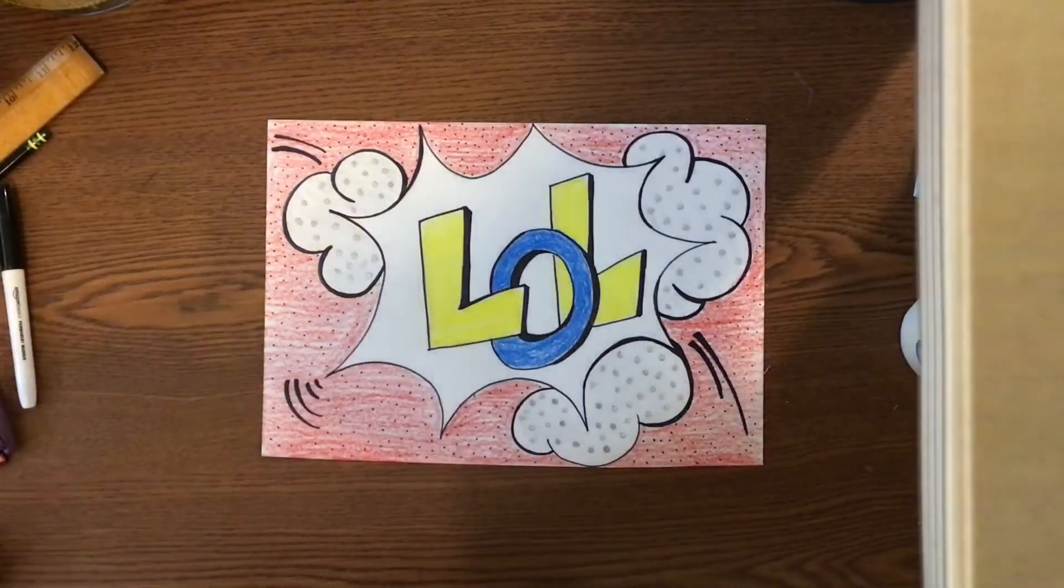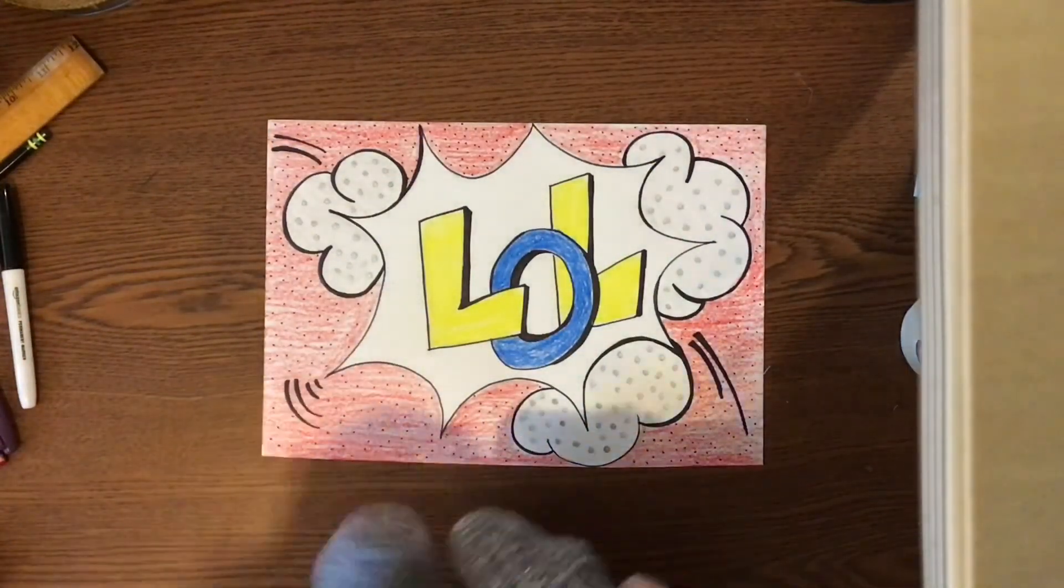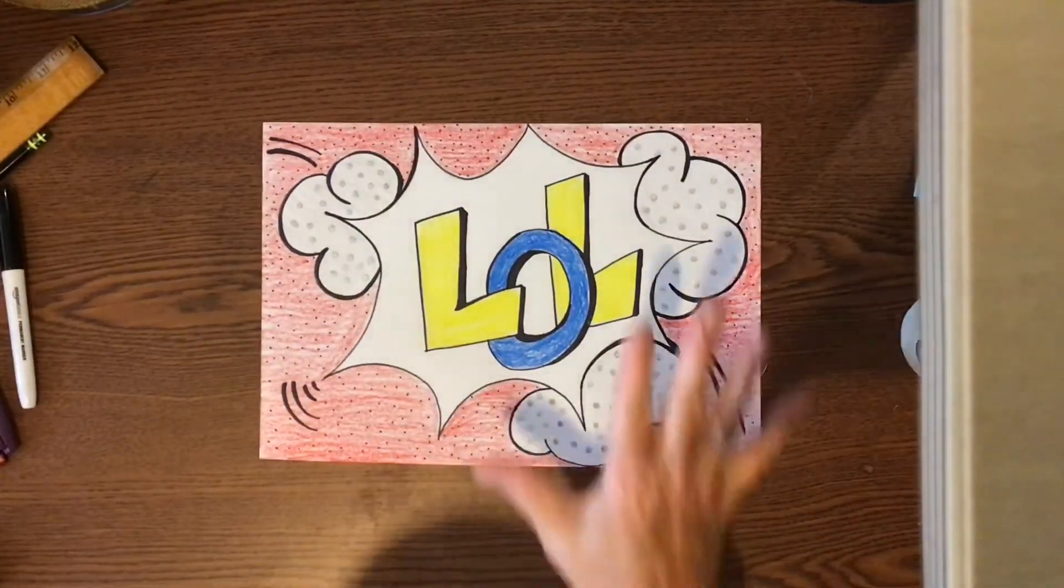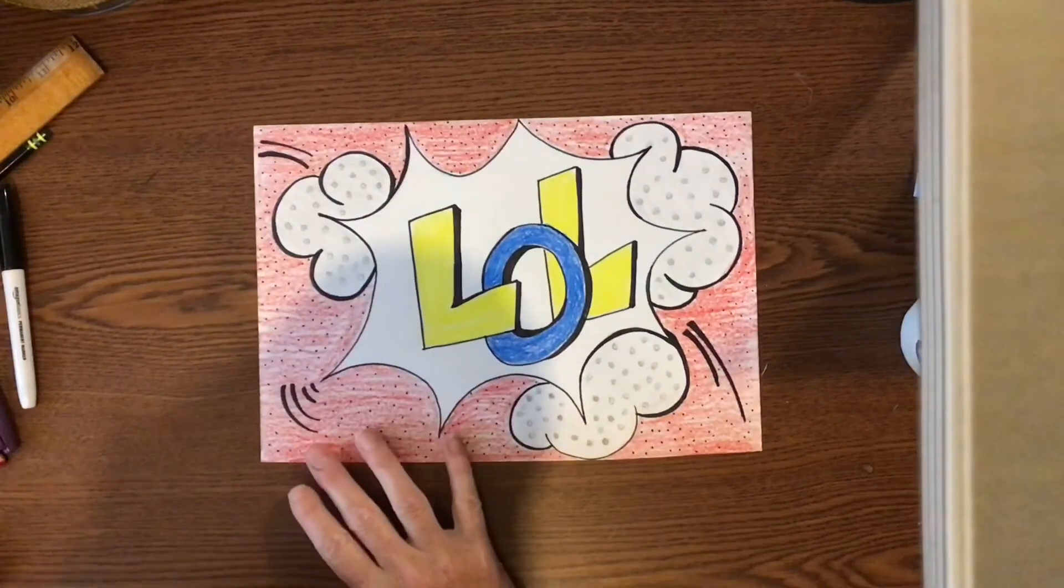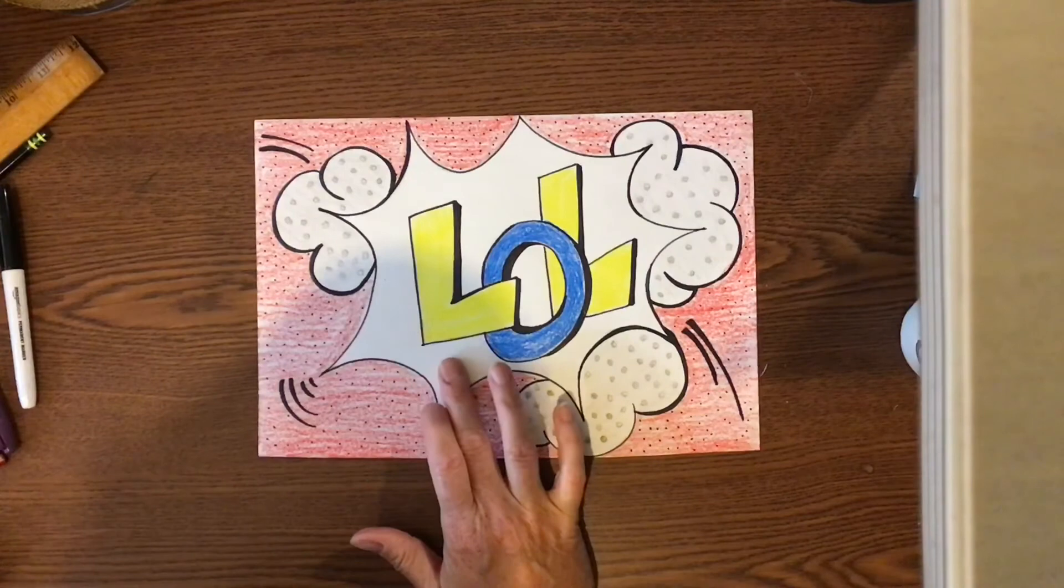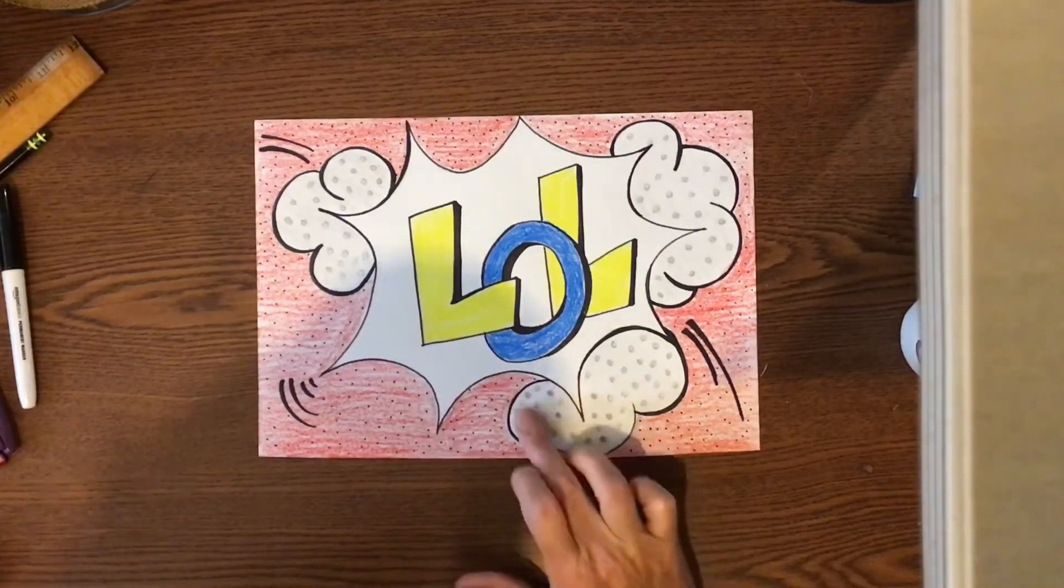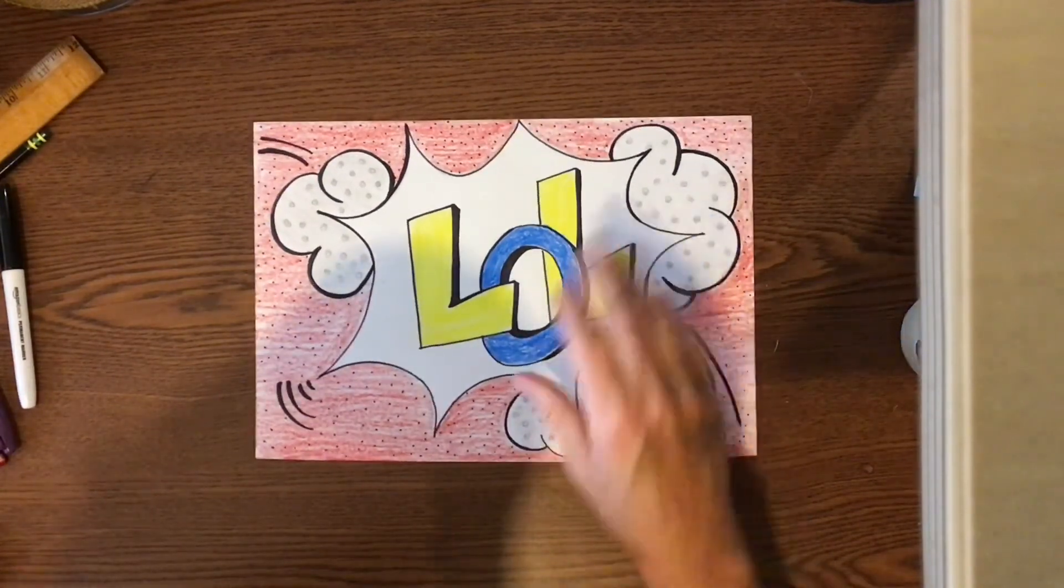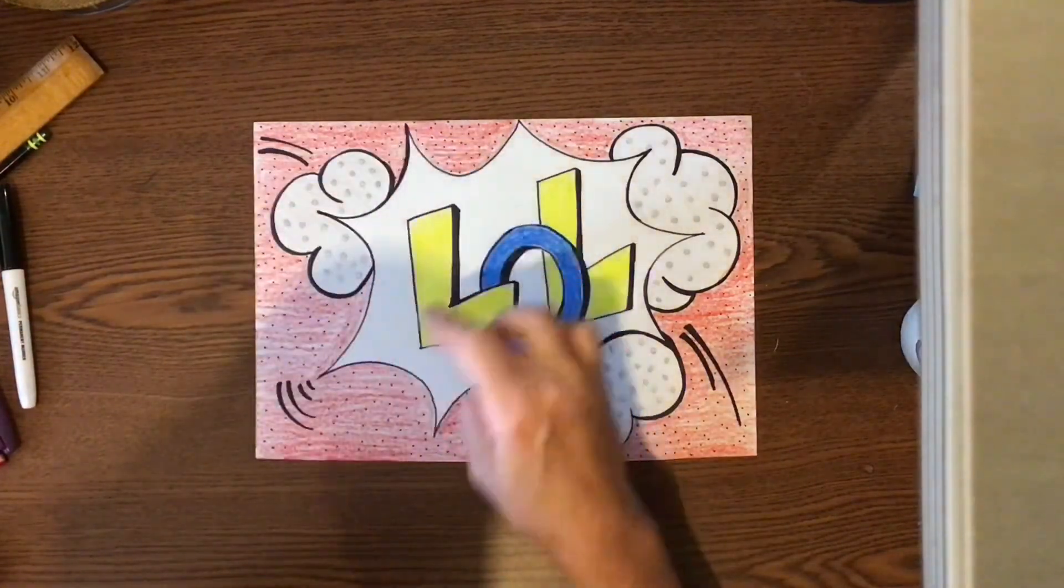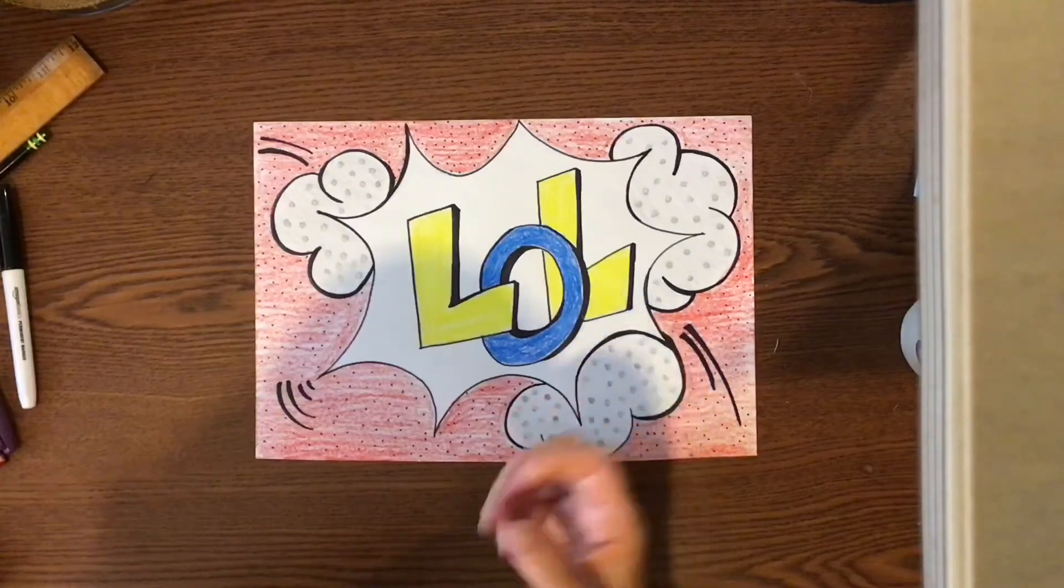So I have finished my pop art. A couple things just to talk about. I used my primary colors. I did some texture in the background. I kept remember I was talking about keeping one of these areas white. I did do some gray texture back here with the clouds. You can see I did shade it just a tiny bit. And I did thicken up some more lines just to make it pop a little bit more.